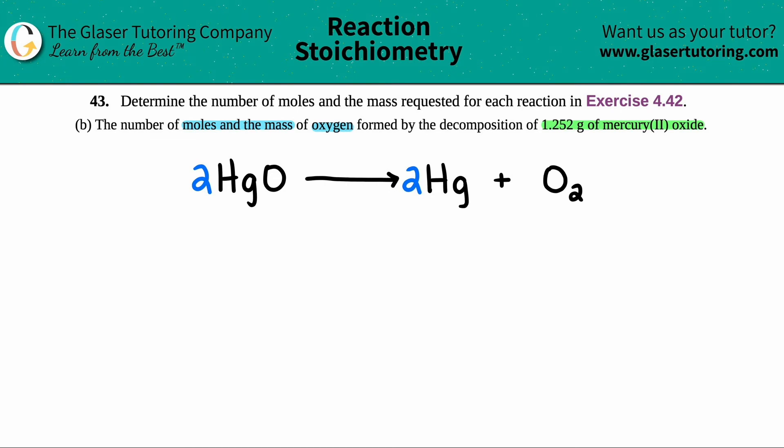Now what I like to do is I like to write underneath the compound that they gave us information for. They told us that we have 1.252 grams of mercury 2 oxide. So I have 1.252 grams of this. And they're looking for a completely different molecule. They're looking for the moles and the mass of oxygen, which is all the way over here. So I need to find out the moles of this and I need to find out the grams because remember, mass is in grams.